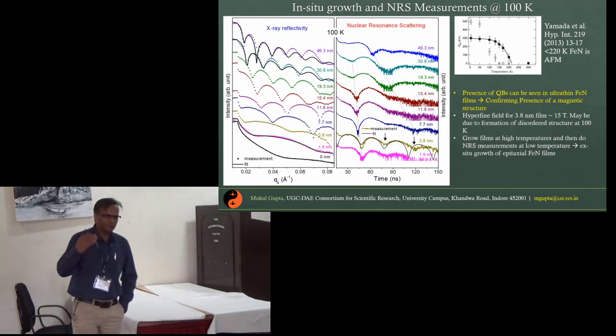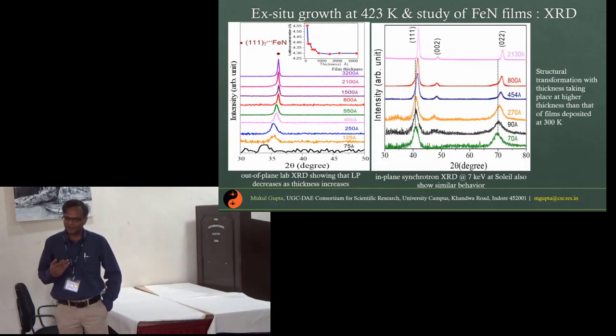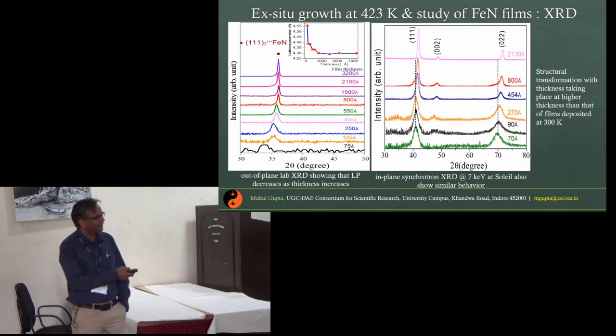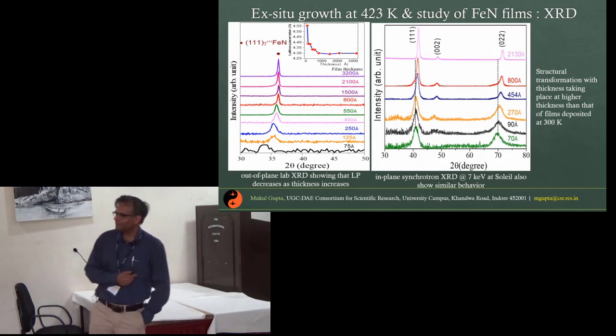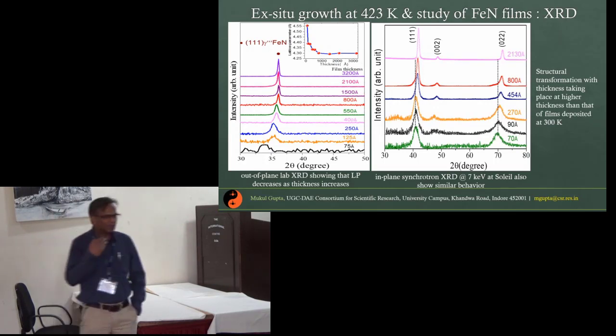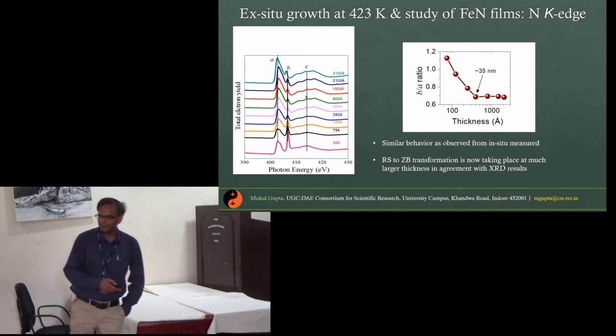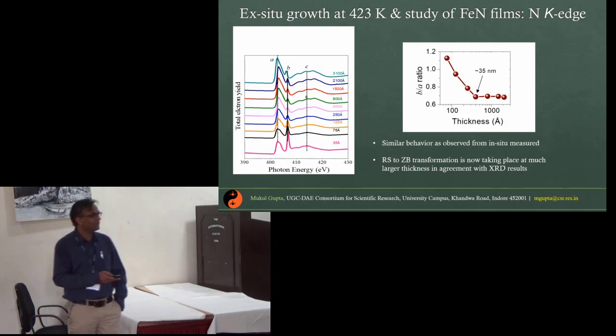The problem is that when we do deposition at low temperature, the long-range ordering is not established, therefore the magnetism is also not very well defined. So we prepared these samples at a much higher temperature where stoichiometric phases can be formed. From doing in-plane and out-of-plane X-ray diffraction measurement, we see this transition is taking place from a higher lattice parameter to a lower one, from rock salt to zinc blende type structure. This time the transition is taking place at a much higher thickness because now the structure is much more well defined. Similarly from the nitrogen K-edge absorption spectroscopy we could see this transition now at a much higher thickness.